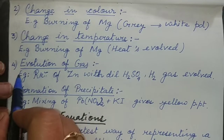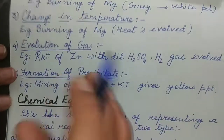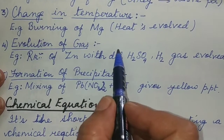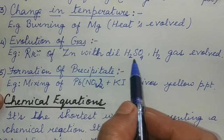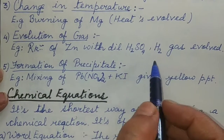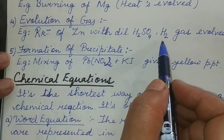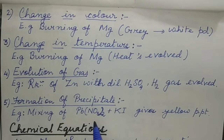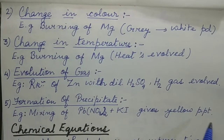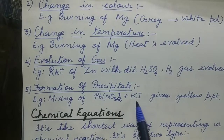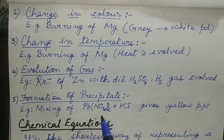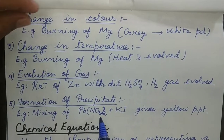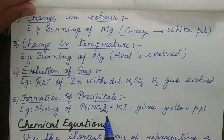Similarly, evolution of gas: whenever a chemical reaction takes place, it is many times accompanied by evolution of bubbles which may be colored or colorless — these are nothing but gas. Example: reaction of zinc with dilute H₂SO₄, where a colorless odorless hydrogen gas is evolved. Next, formation of precipitate: when reactants are colorless aqueous solutions and on mixing we get a yellow precipitate as in the case of potassium iodide and lead nitrate — we can understand that a chemical reaction has occurred.